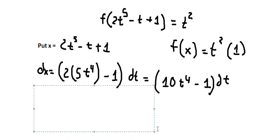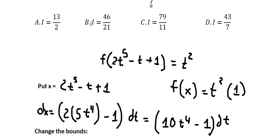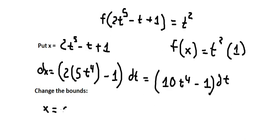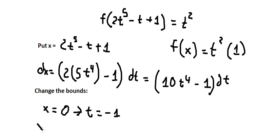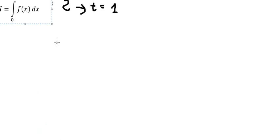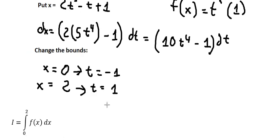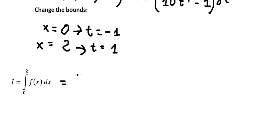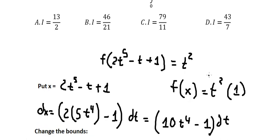Now the next step is to change the bounds. When x equals 0, we substitute 0 in here to find the value of t, and we get t equals negative 1. When s equals 2, we substitute 2 in here to find the value of t, and we get t equals 1. Now we change the bounds: 0 becomes negative 1, and 2 becomes positive 1.